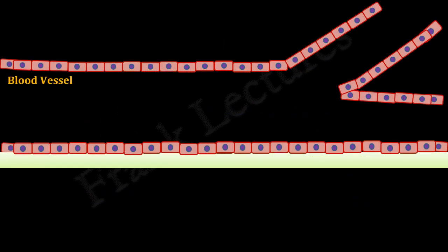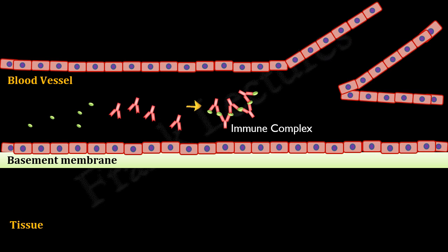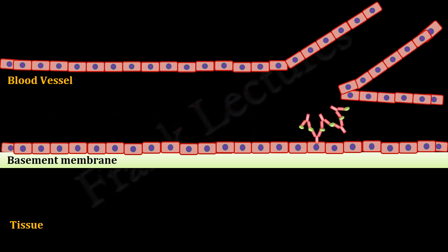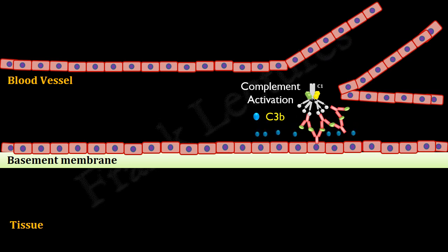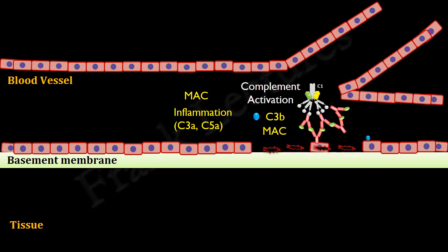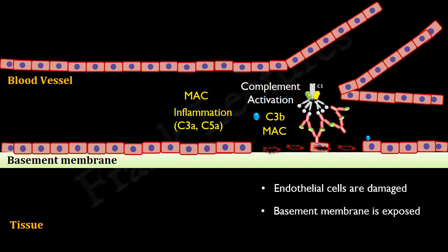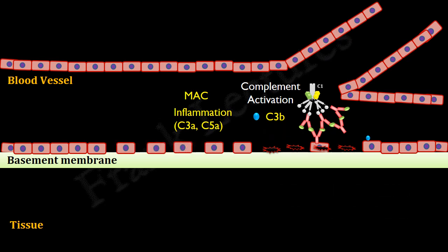These are blood vessels, and this is the underlying basement membrane followed by the tissue. These are circulating antigens and these are the antibodies. Antigens and antibodies bind to each other and form insoluble immune complexes. These immune complexes get deposited on the wall of small blood vessels. Complement protein C1 binds to the FC region of antibodies of the immune complex and activates the classical complement pathway. C3b produced during this pathway coats nearby endothelial cells, which are then destroyed by membrane attack complexes. The increased permeability of blood vessels also results from the inflammatory response.